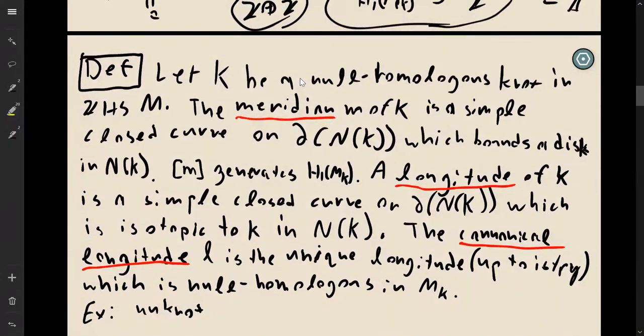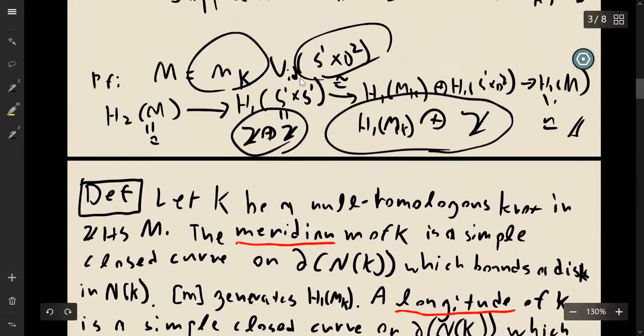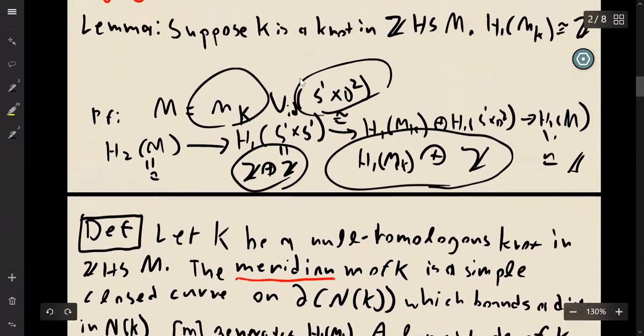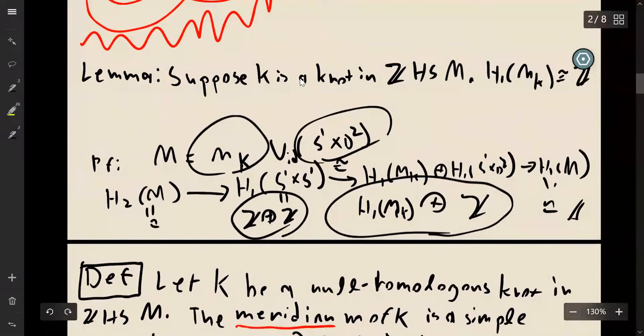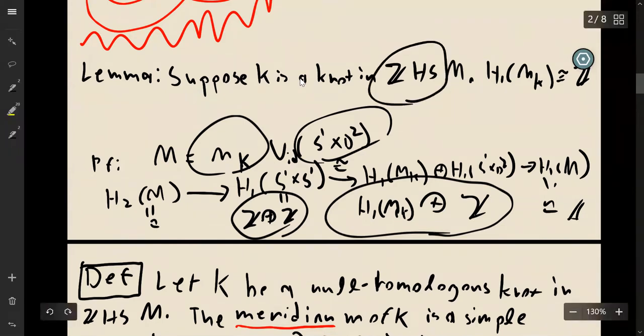Is this for a link in S³? It applies to a knot in an integer homology sphere. S³ is an example, but it could be any integer homology sphere — the integer homology sphere condition is what's important.